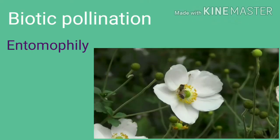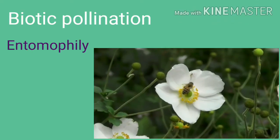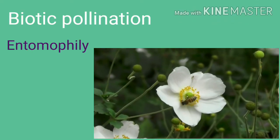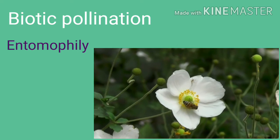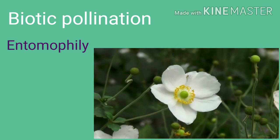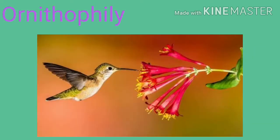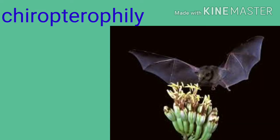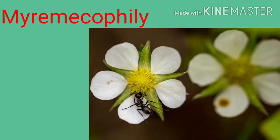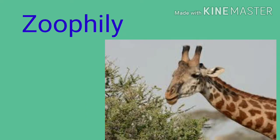Coming to biotic pollination: entomophily — pollination by insects; ornithophily — pollination by birds; chiropterophily — pollination by bats; myrmecophily — pollination by ants.